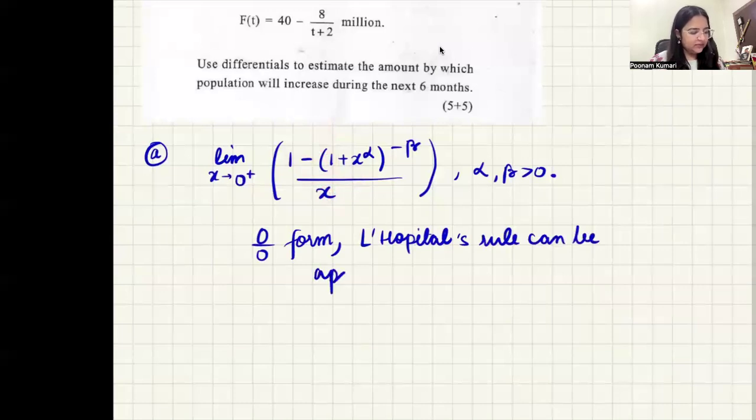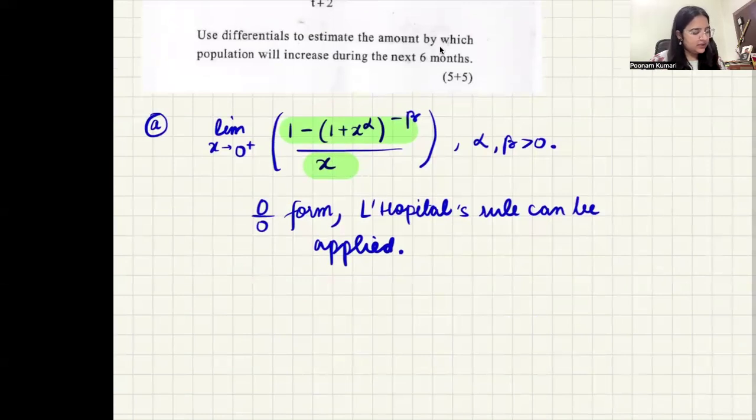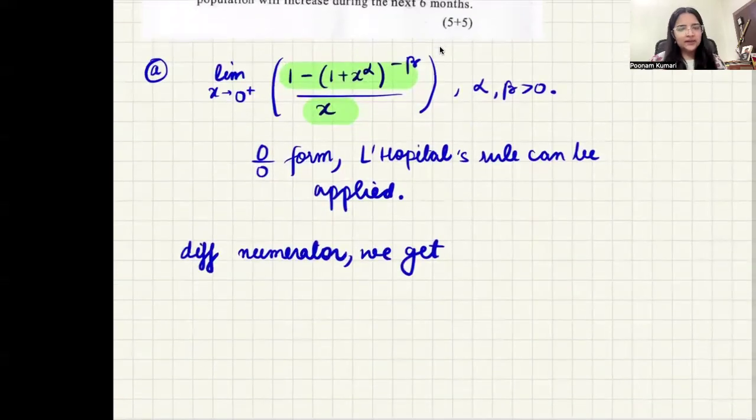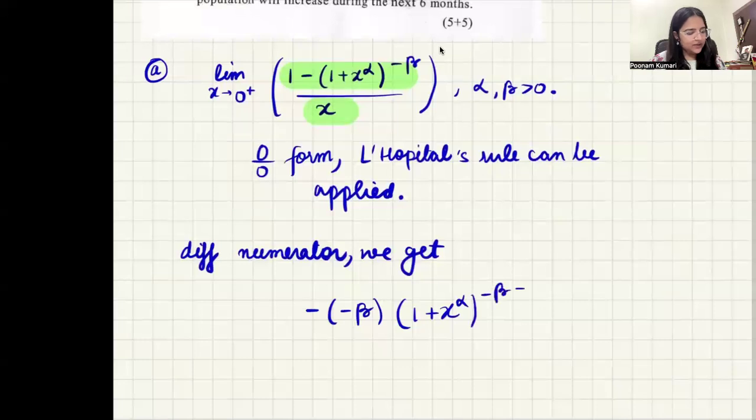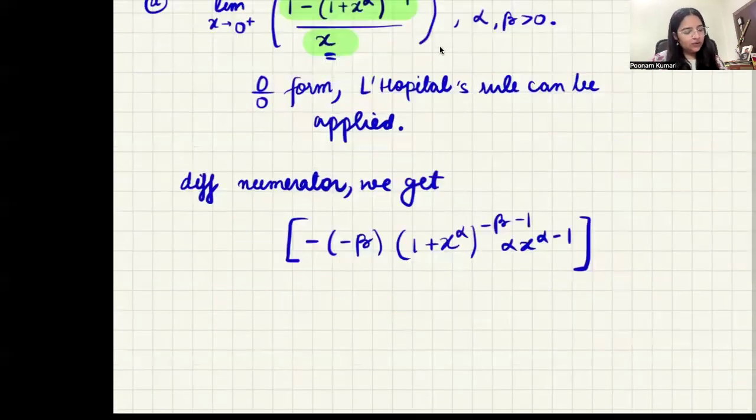We will apply that. To apply L'Hospital's rule, the numerator has to be differentiated and denominator has to be differentiated separately, and then we will put the limit. So let's see. Differentiating numerator, we get: derivative of one is zero, and then minus power minus beta comes out. So we have minus, then minus beta outside. Then one plus x raised to the power alpha, and here minus beta minus one. And then the derivative of the inner expression: derivative of one is zero, x raised to power alpha gives derivative alpha x raised to power alpha minus one. That's the numerator derivative. And denominator derivative is just derivative of x, which is one.